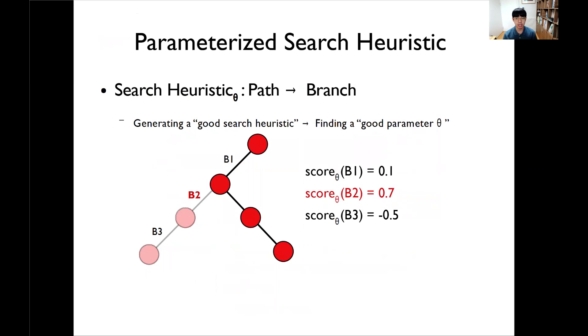To achieve our goal, the first key idea is to parameterize a search heuristic. Generally, the existing search heuristic can be defined as selecting a branch in an execution path. Our parametric search heuristic determines which branch to select by this parameter value, theta. So our heuristic can transform the original problem of generating good search heuristic into the reduced problem of finding a good parameter theta. Using the parameter theta, we can calculate each branch score in the execution path and we simply choose the top-scored branches. Let me explain how to score each branch using the parameter value theta.